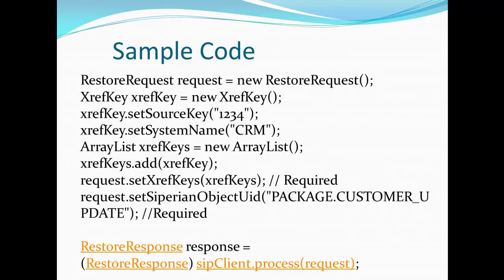Looking at the sample code: first, create an object of RestoreRequest using the new operator. Then create an object of XRefKey. In that XRefKey object, store the resource key — which is the PK source object or the unique key from the source system itself — and then the system name indicating who is contributing this record.